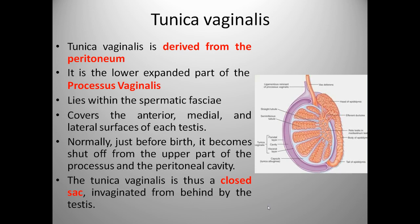Now we will see the tunica vaginalis. It is derived from the peritoneum and is the lower expanded part of the processus vaginalis and lies within the spermatic fascia. It covers the anterior, medial, and lateral surface of each testis. Normally, just before birth, it becomes shut off from the upper part of the processus and the peritoneal cavity. The tunica vaginalis is thus a closed sac in which it is formed behind by the testis.